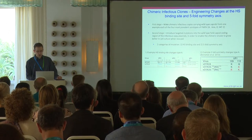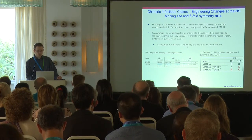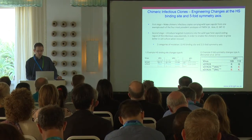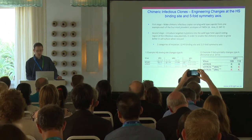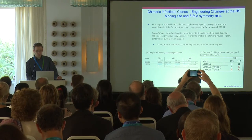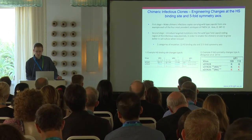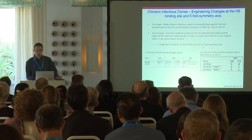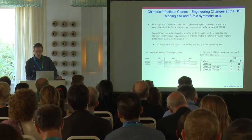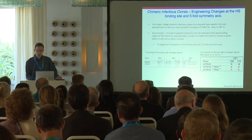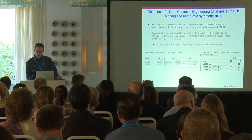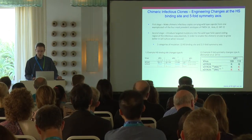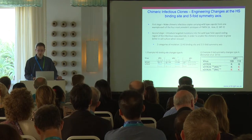We looked at two categories of mutation. Firstly, around the heparan sulfate binding site first identified for type O, and here's an example of changes introduced for type A, with the blue residues being those present in the wild type, and the red residues those changed to form the HS variant. We also looked at introducing changes in the five-fold symmetry axis, and for the type A shown here, this was based on changes we saw previously by passage of a type A virus. For A, we produced a KK and RK variant of VP1 positions 109 and 110, which is around the five-fold axis.